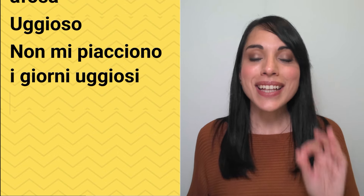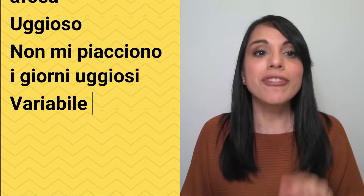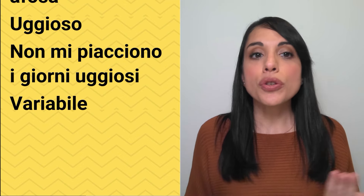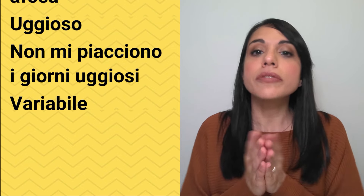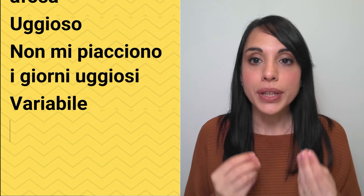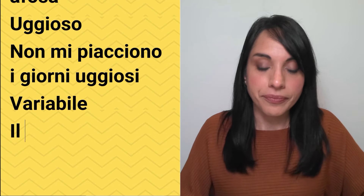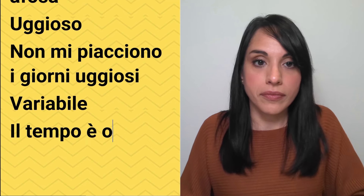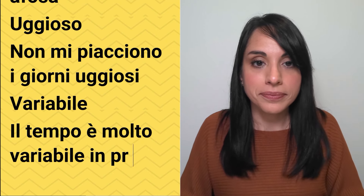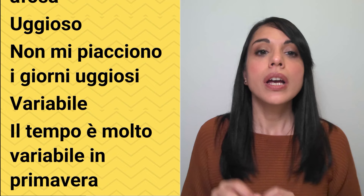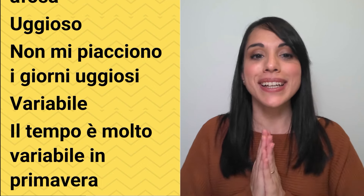And the last word is 'variabile' — which means variable. You can use this to say that the weather is variable in a certain period. For example: 'Il tempo è molto variabile in primavera' — the weather is very variable in spring. Il tempo è molto variabile in primavera.